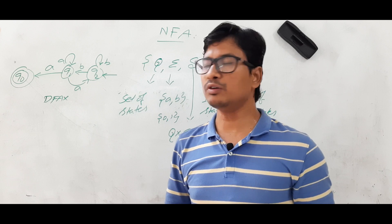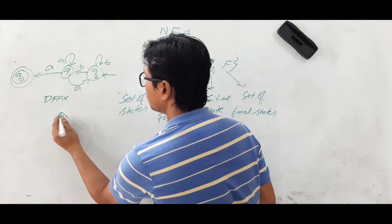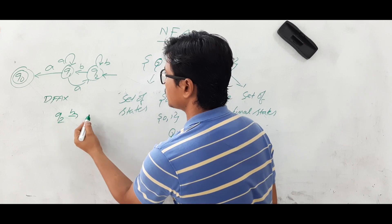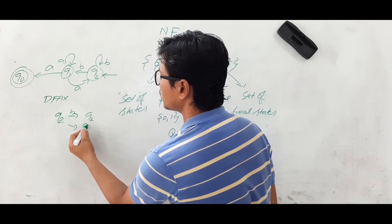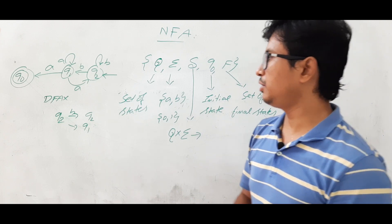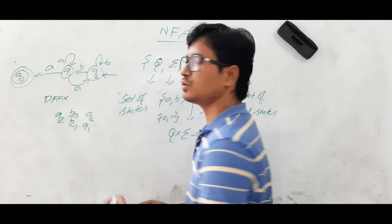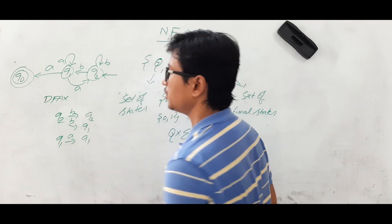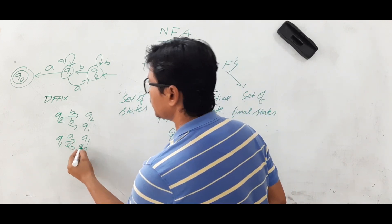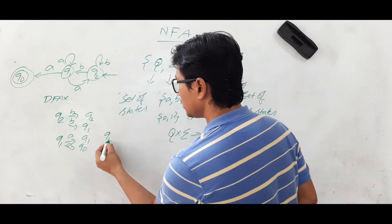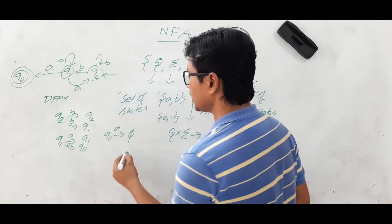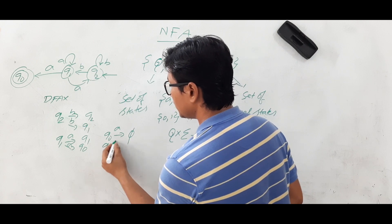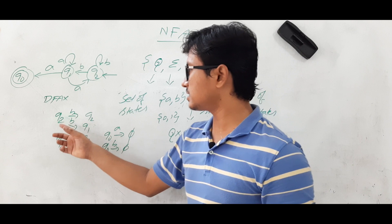Now let's check whether it is an NFA. If you see that q₂ on 'b', it is going to both q₂ and q₁ — two states. Similarly, q₁ on 'a' is going to both q₁ and q₀. And q₀ on 'a' is not going anywhere, and q₀ on 'b' is also not going anywhere.